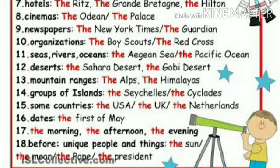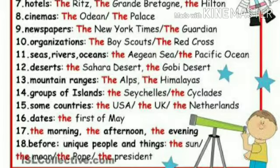Number fourteen: groups of islands — the Cyclades. Number fifteen: some countries — the USA, the UK, the Netherlands. Number sixteen: dates — the first of May. Number seventeen: the morning, the afternoon, the evening. And number eighteen, the last: before unique people and things — the sun, the moon, and the president.